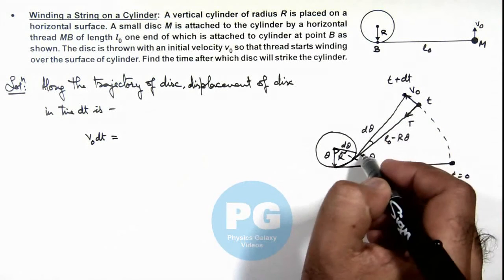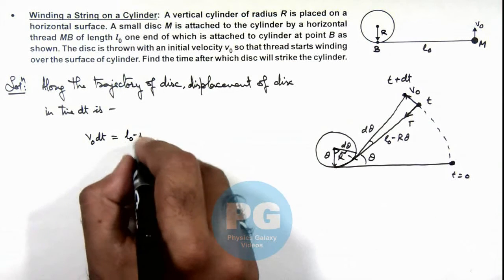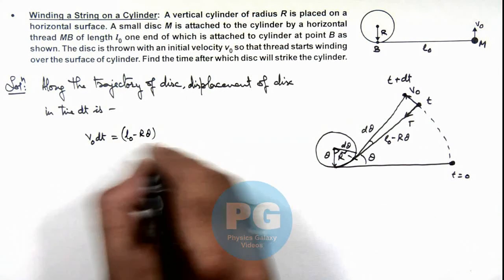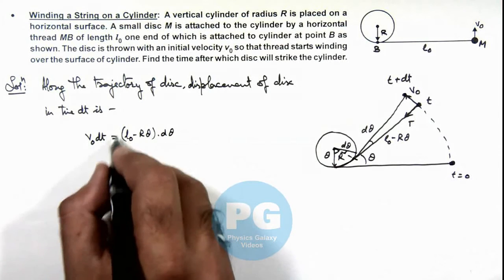As this length of string is L₀ - Rθ, then this can be written as (L₀ - Rθ) multiplied by dθ. Now this expression can be integrated.